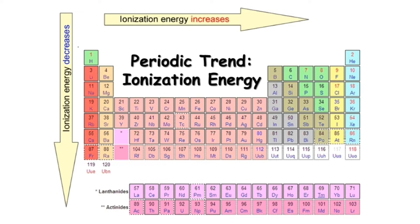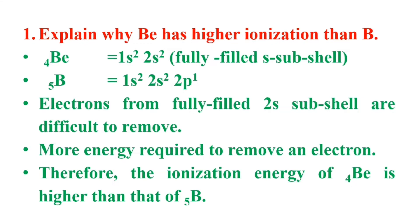4Be has the complete electron configuration: 1s2, 2s2.